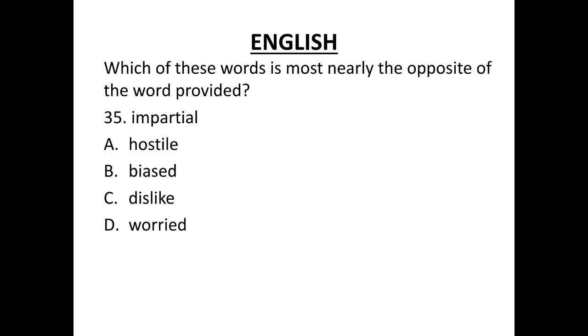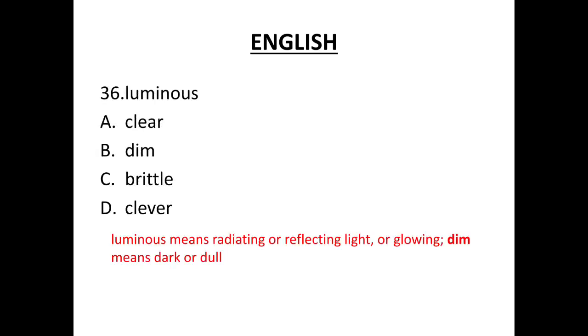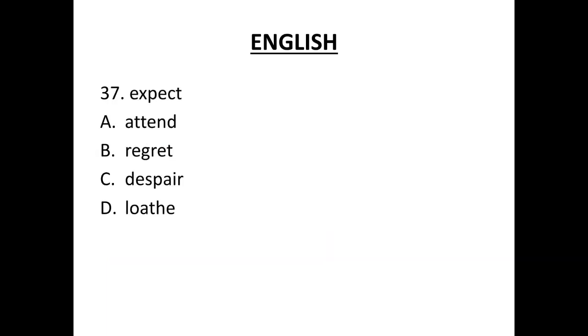Which of these words is most nearly the opposite of the word provided? Antonyms or the opposite words. Impartial, biased will be the antonym. Impartial means to be without prejudice or biased. Therefore, biased is the correct opposite. Luminous means radiating or reflecting light or glowing. So, dim means dark or dull which is the correct antonym. Expect. Correct option is despair. To expect is to wait for or to look forward to. To despair is to lose all hope.